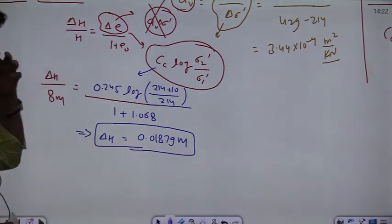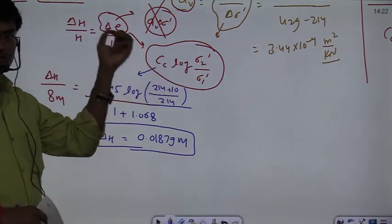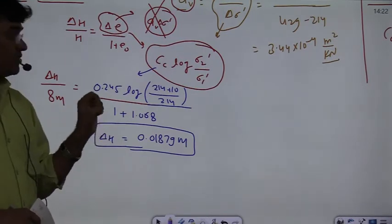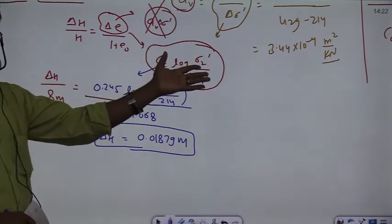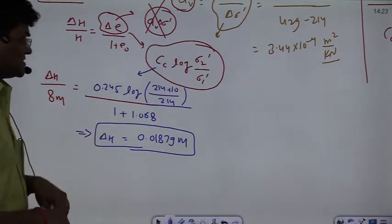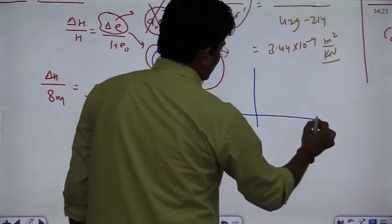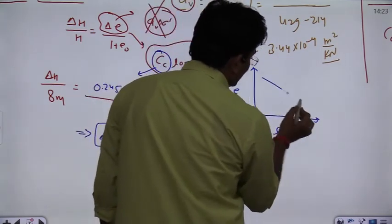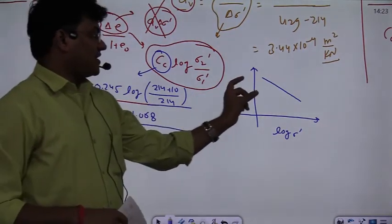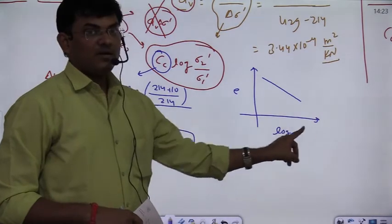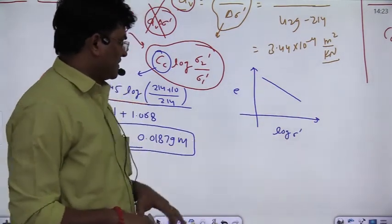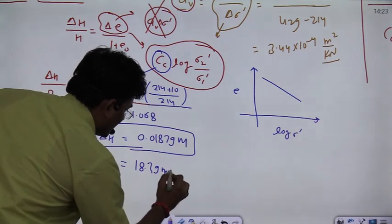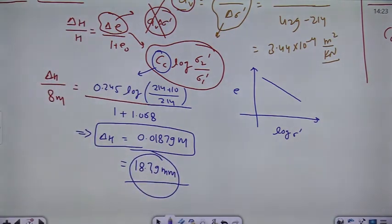I referred classes to which I have given you a concept: coefficient of compression, coefficient of compressibility, and coefficient of volume compressibility. We have given you three coefficient amounts. When you look at the graph, log of sigma dash void ratio, this graph is a straight line. The coefficient of compression is one of the parameters that does not depend on the coefficient of compression. This is coming out to be 18.79 mm settlement. This is the clay layer.